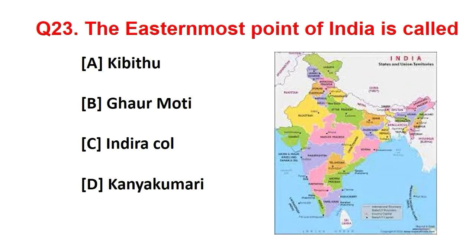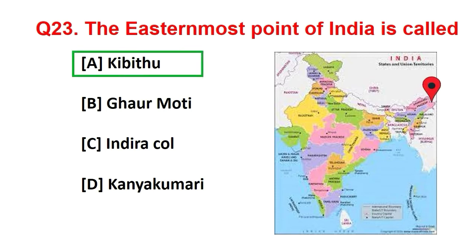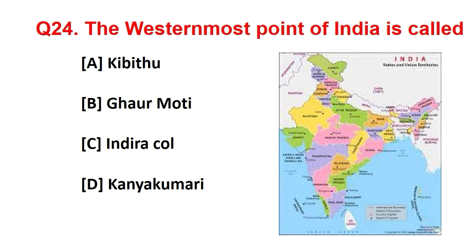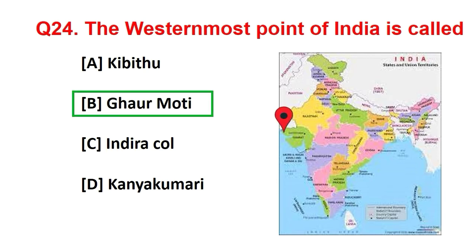Question number 23. The easternmost point of India is called? Answer is Kibithu, and it is located in Arunachal Pradesh. Question number 24. The westernmost point of India is called? Answer is Ghuar Mota, and it is located in Gujarat.